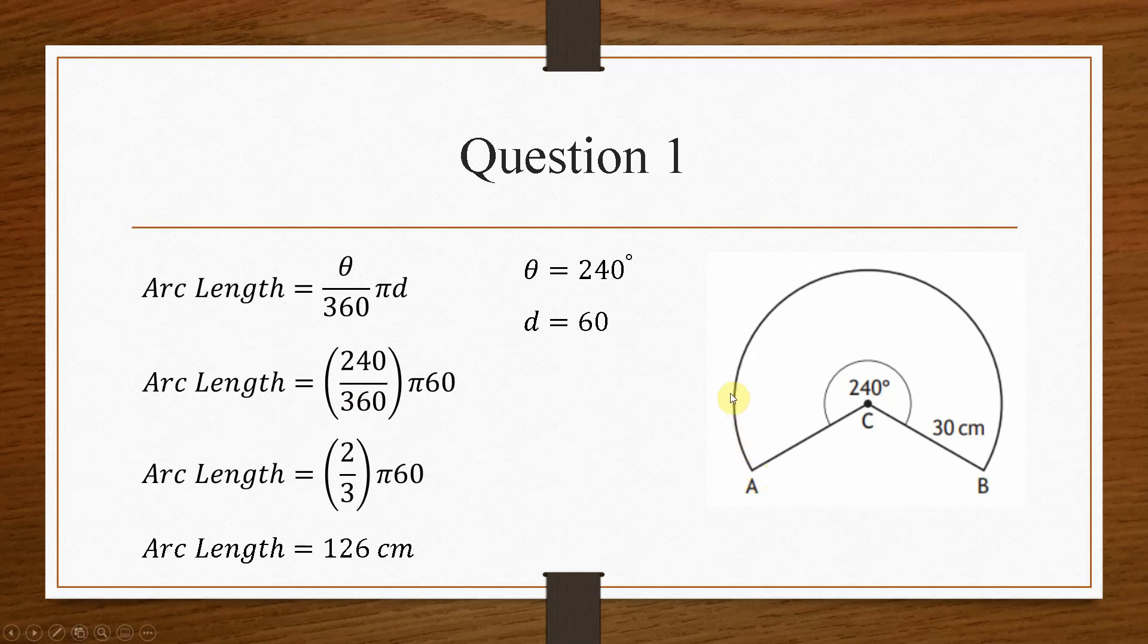So that means from this point, if we go all the way around to here, is 126 centimetres. And just for practice, what you could do is you could work out the full circumference of the circle, and then you could find the arc length that corresponds to 120 degrees. Add the two values between that one and the 120, and if it gives you the same value as the circumference, you know you have done it right.